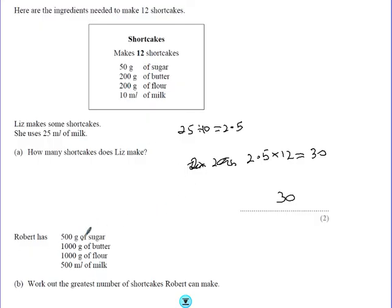Last question then. Robert has these amounts of each of the ingredients. Work out the greatest number of shortcakes Robert can make. If he's got 500 grams of sugar, and he only needs 50 grams of sugar to make 12, then 500 divided by 50 is 10. So the sugar would mean that he's got enough to make 10 of these recipes. So he could make 10 lots of 12, which is 120.